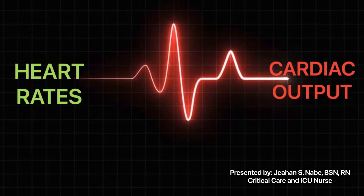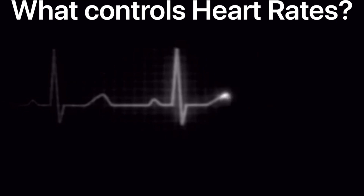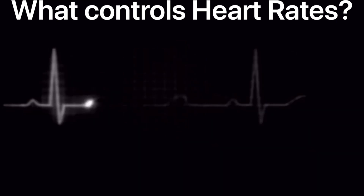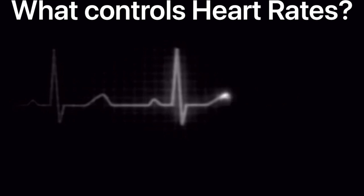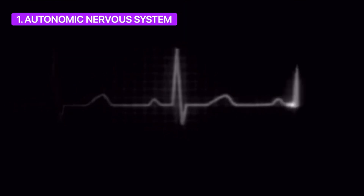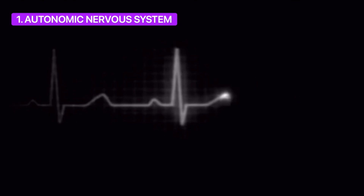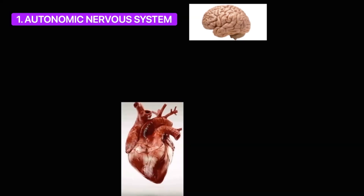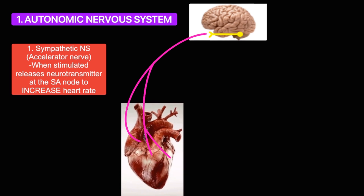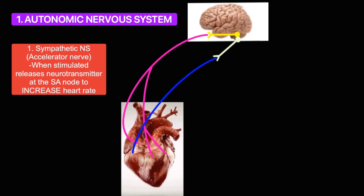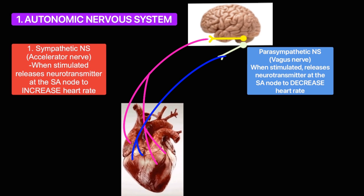What controls heart rates? In general, heart rate is regulated by these factors. One factor is the autonomic nervous system. The autonomic nervous system may influence heart rate when the sympathetic nervous system stimulates cardiac muscle contractions, or when the parasympathetic nervous system inhibits cardiac muscle contractions.